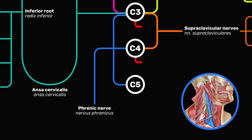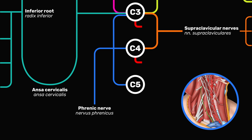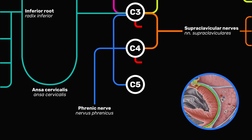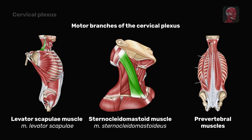The phrenic nerve receives most of its fibers from C4, with small contributions from C3 and C5 nerves. The nerve is formed in the area of the lateral part of the anterior scalene muscle at the level of the superior border of the thyroid cartilage. It descends with the internal jugular vein obliquely along the anterior scalenus muscle, passes posteriorly to the subclavian vein, anteriorly to the internal thoracic artery, and enters the thoracic cavity. The phrenic nerve contains not only motor but also sensory and sympathetic nerve fibers, which makes it a mixed nerve. It provides motor supply to the diaphragm as well as sensation to its central area, and in the thoracic cavity it innervates the mediastinal pleura and pericardium.